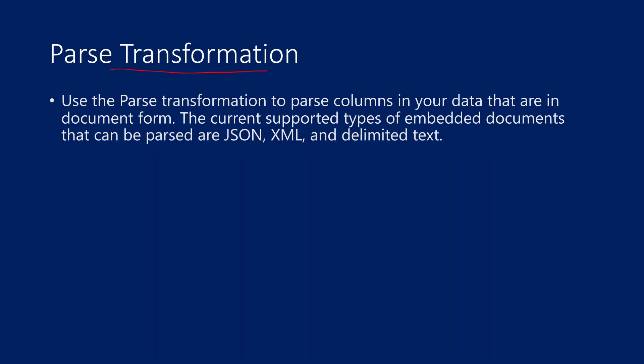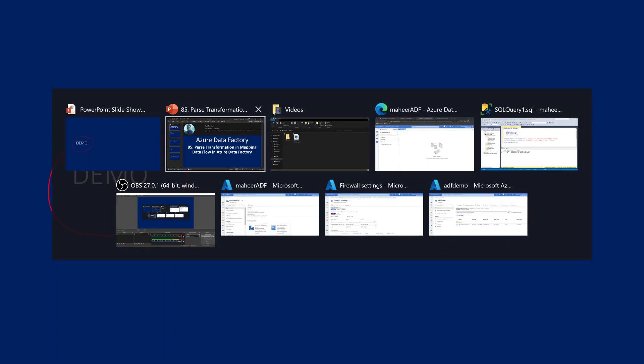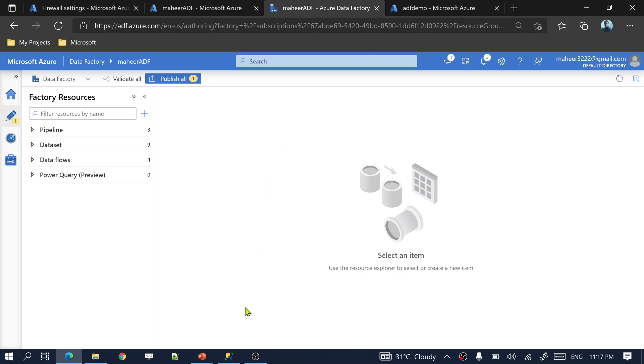We'll also see a practical demo. We use parse transformation whenever you have data in a column of your table or file in some document format — maybe JSON data in one column, XML data, or delimited text type of data. If you want to convert that particular data into separate columns, you can use parse transformation.